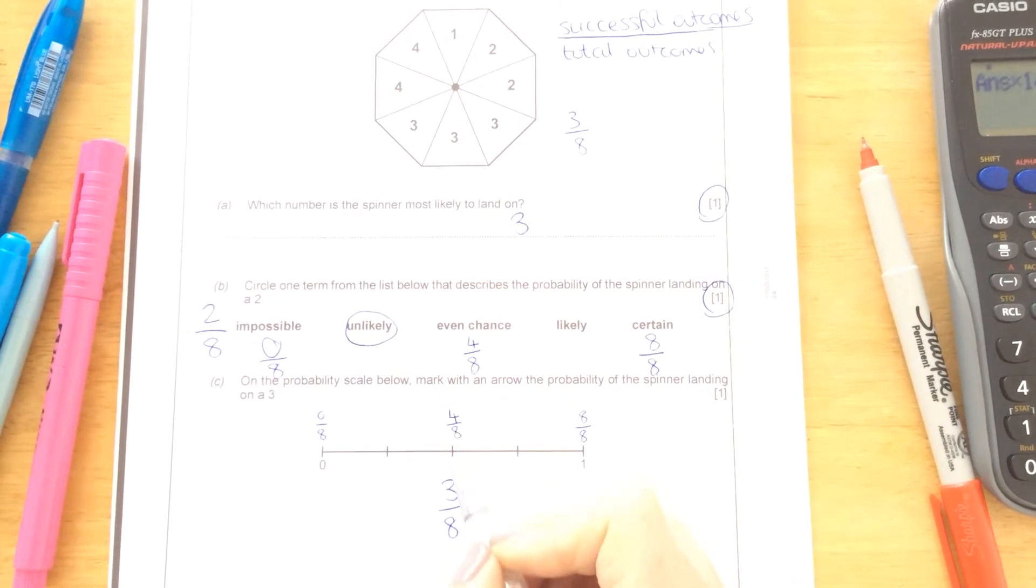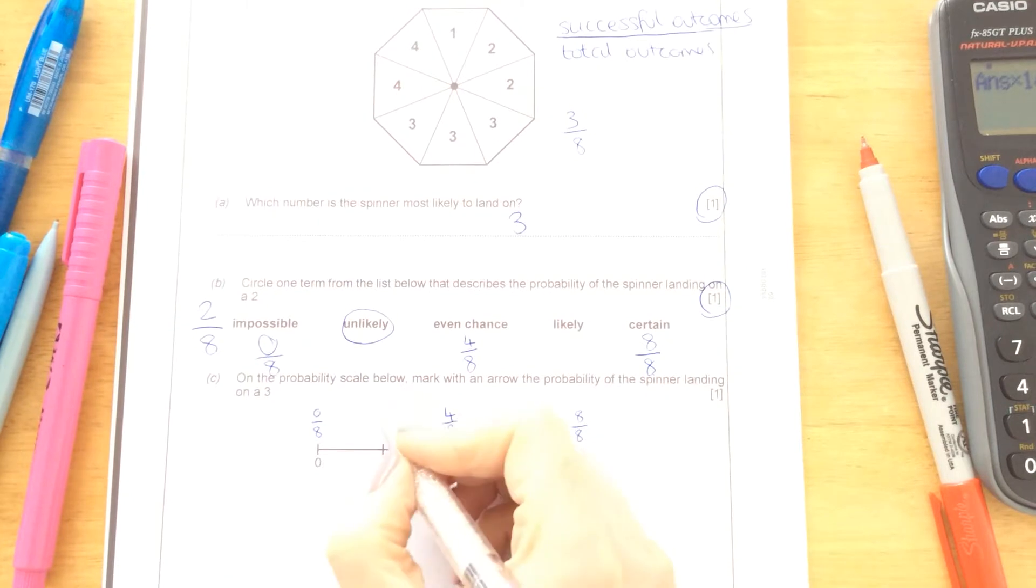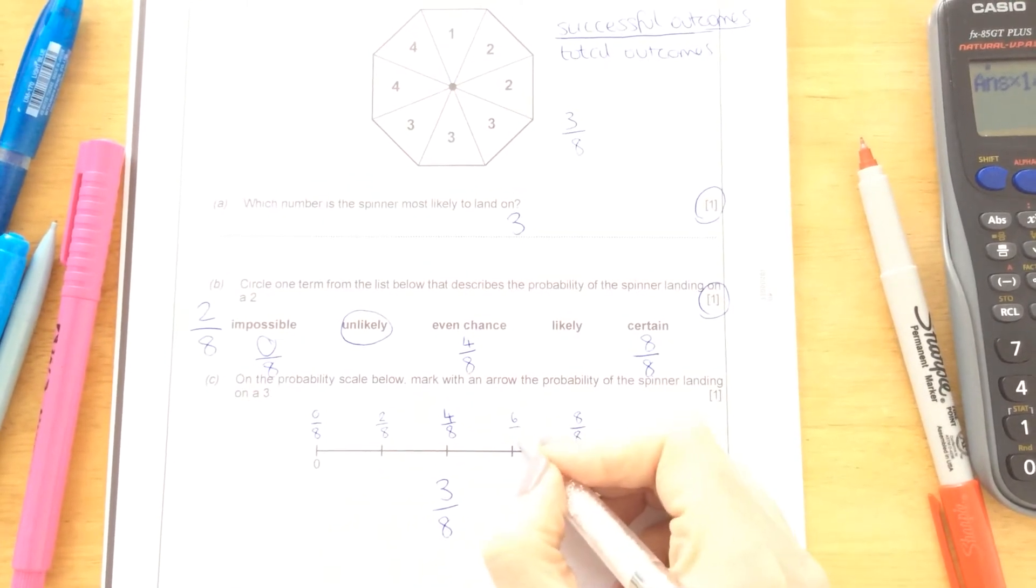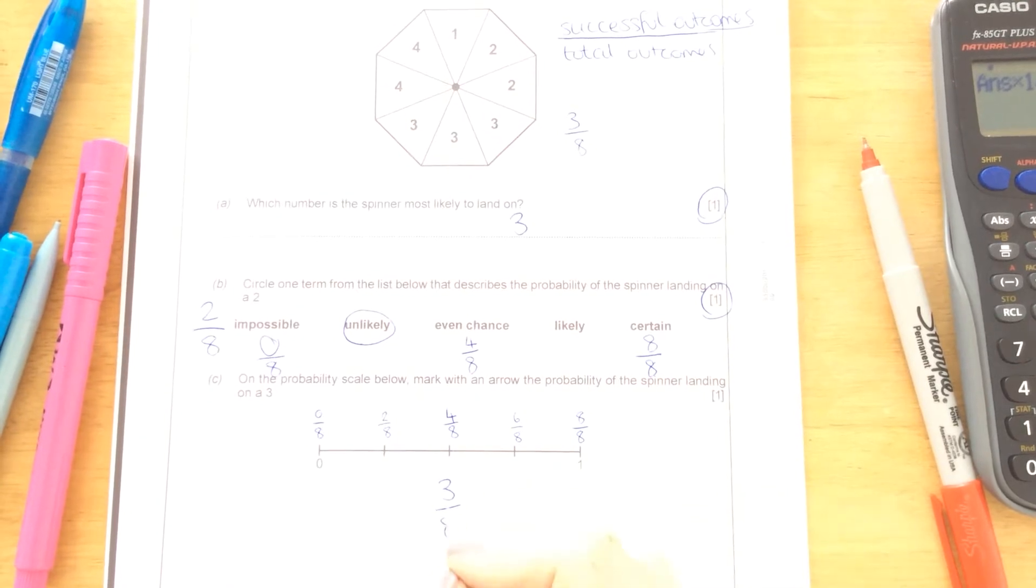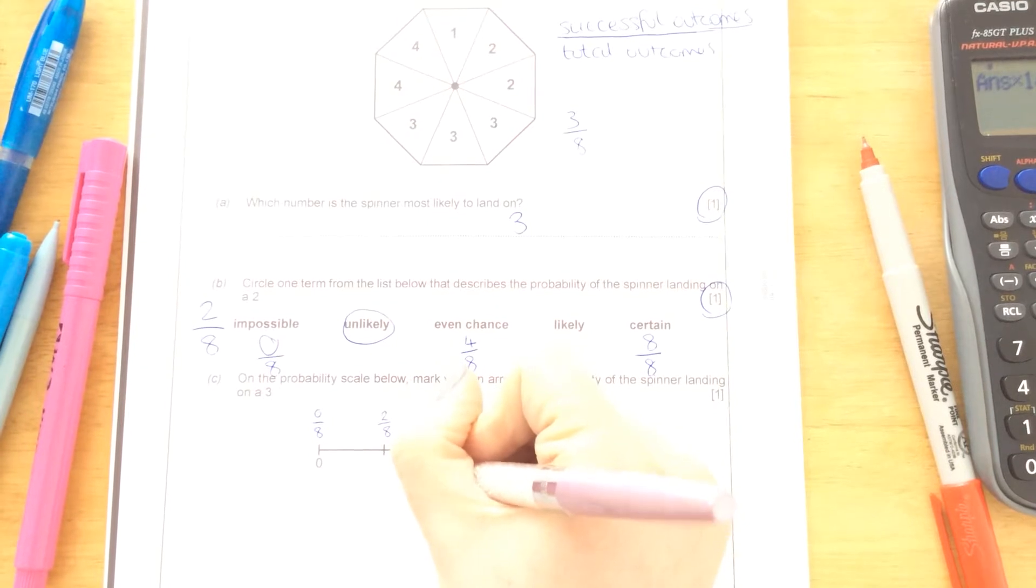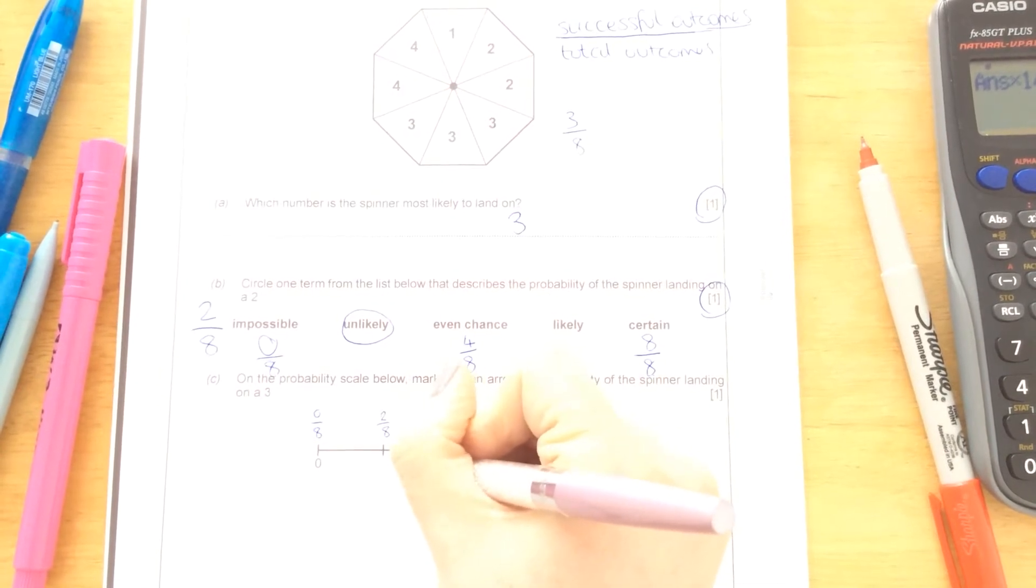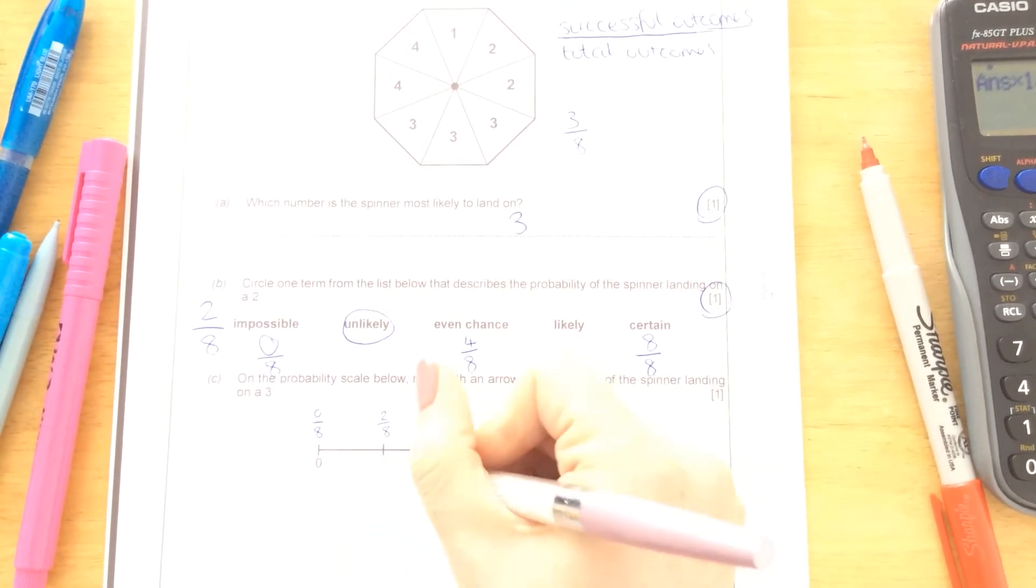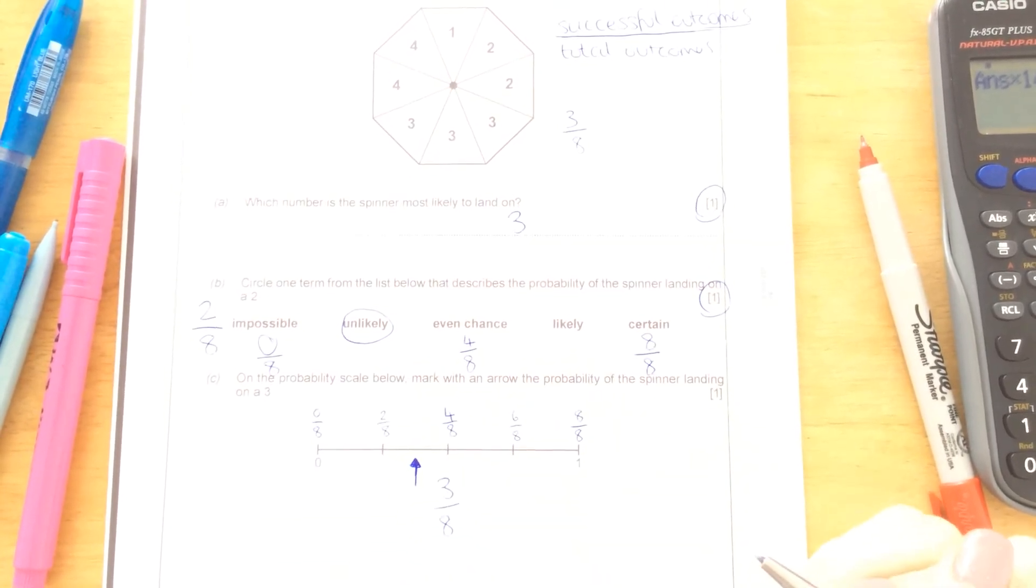So if this is halfway, that would be 4, this would be 2, and this would be 6 out of 8. So my 3 out of 8 is going to come exactly halfway in between these two. I'm just going to show with an arrow the probability of the spinner landing on a 3. That would be here, and that would be 1 mark.